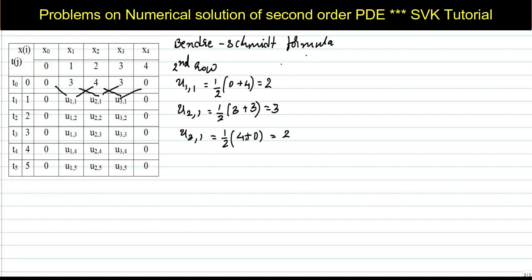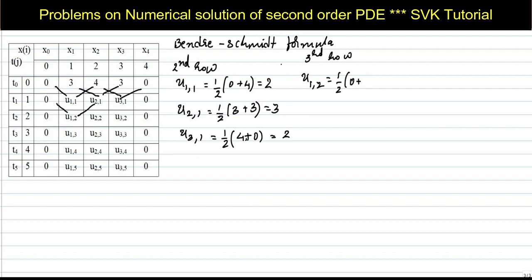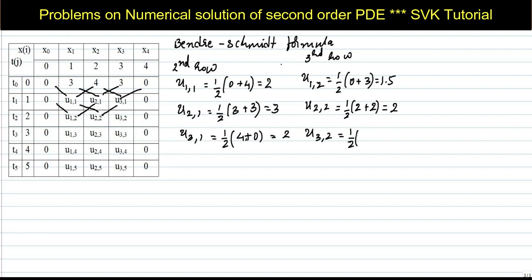For the third row: u(1,2) = (1/2)(0 + u(2,1)) = (1/2)(0 + 3) = 1.5. u(2,2) = (1/2)(u(1,1) + u(3,1)) = (1/2)(2 + 2) = 2. u(3,2) = (1/2)(u(2,1) + 0) = (1/2)(3 + 0) = 1.5.